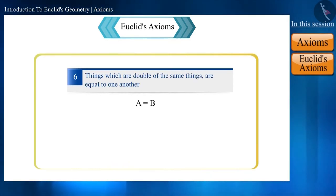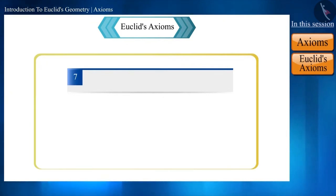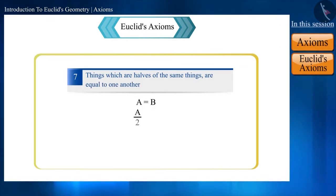According to Euclid's sixth axiom, things which are double of the same things are equal to one another. If a and b are equal, then their double, that is 2a and 2b, will also be equal. And the seventh axiom is also such that things which are halves of the same things are equal to one another.